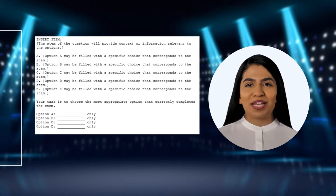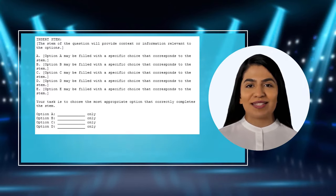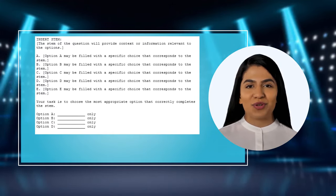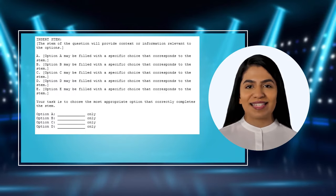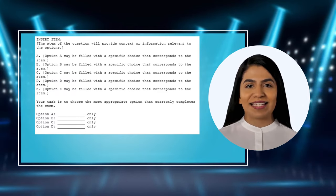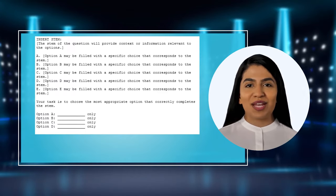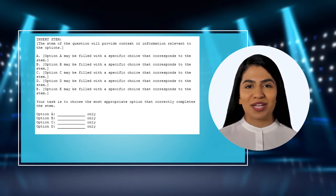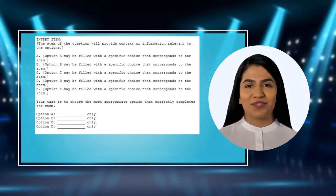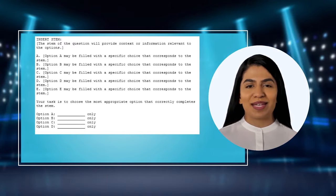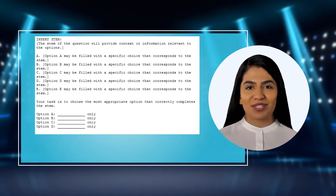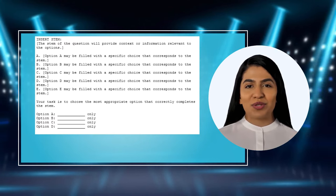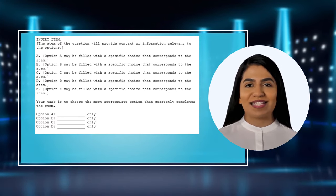In combination with single answer option MCQs, you will be provided with a stem followed by a set of options labeled as A, B, C, D, and E. Your task is to carefully read the stem and choose the single correct option that best matches the information or context provided. Here is how these questions are structured. Your task is to choose the most appropriate option that correctly completes the stem.